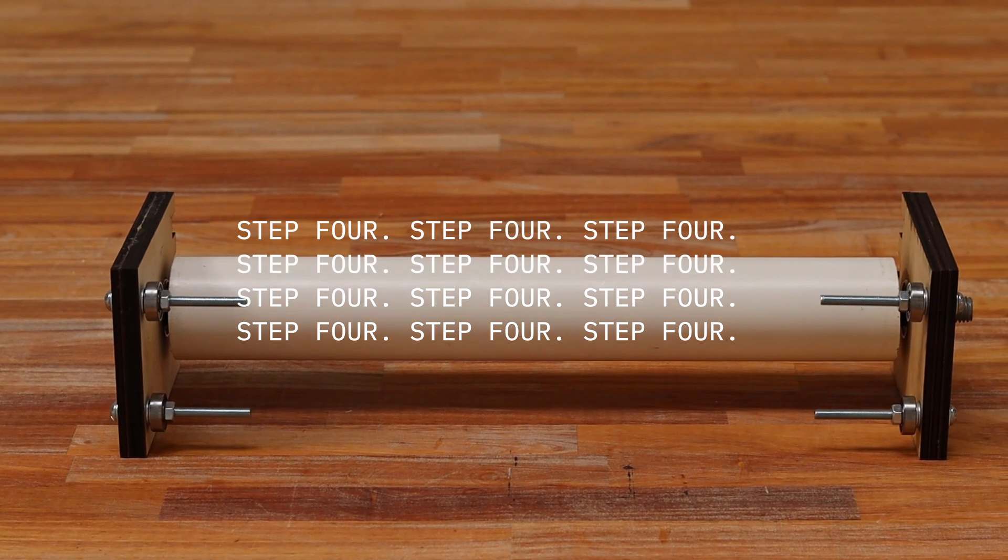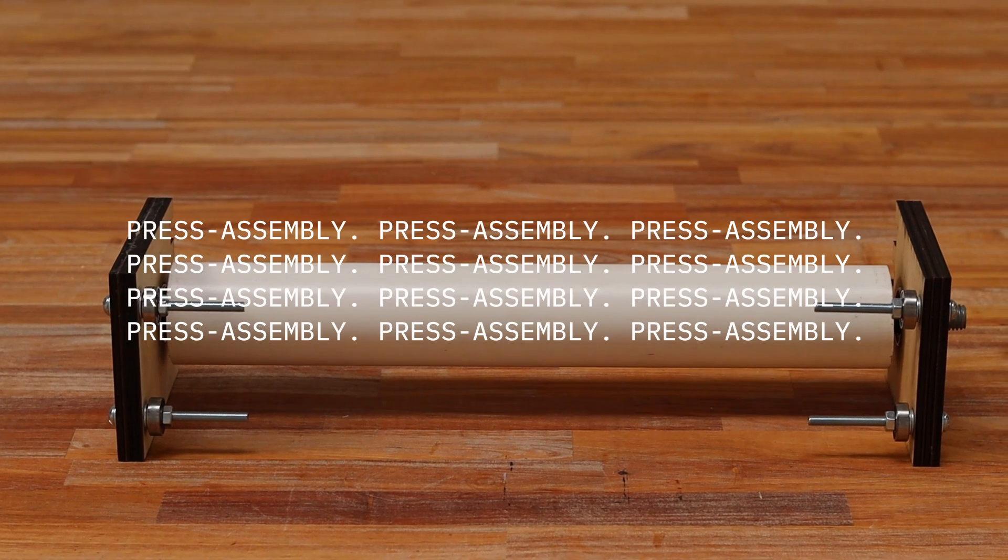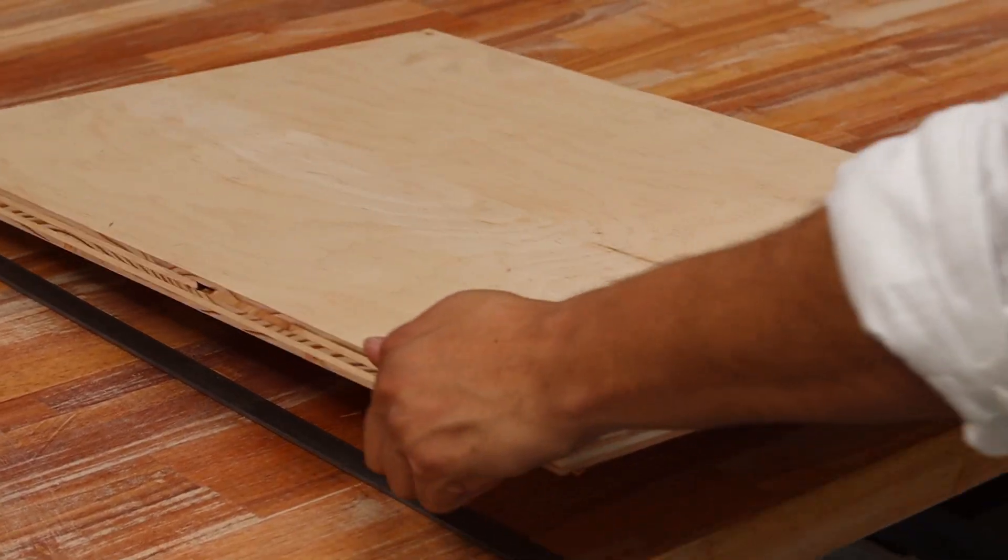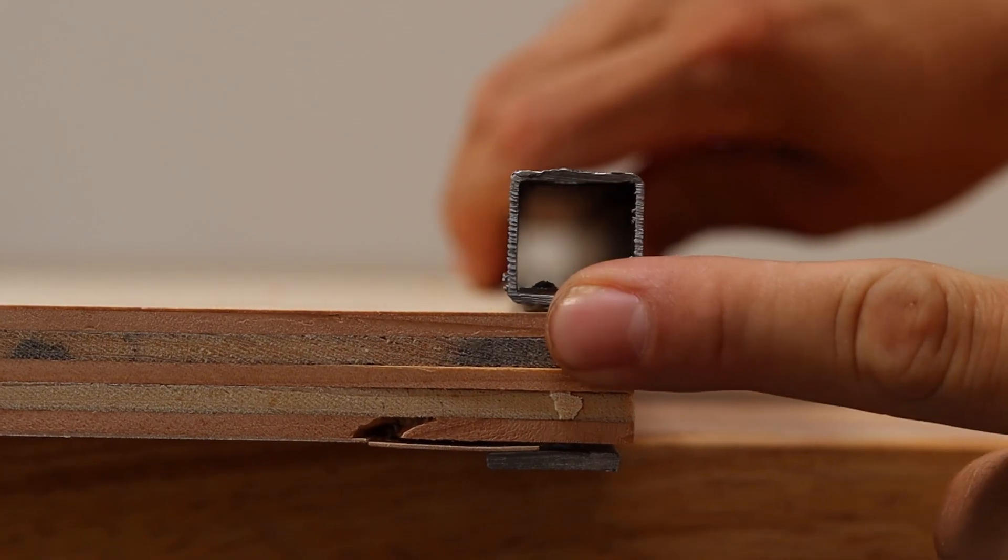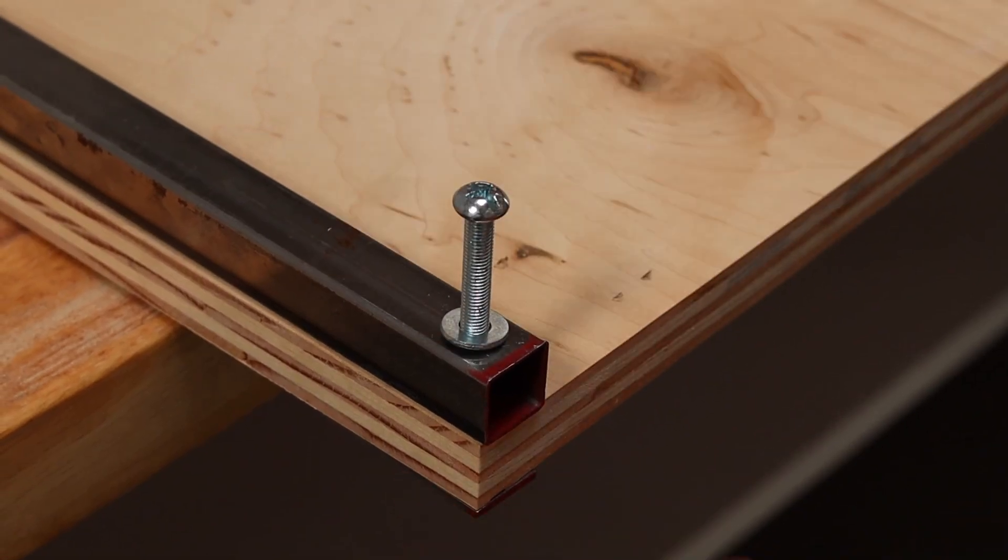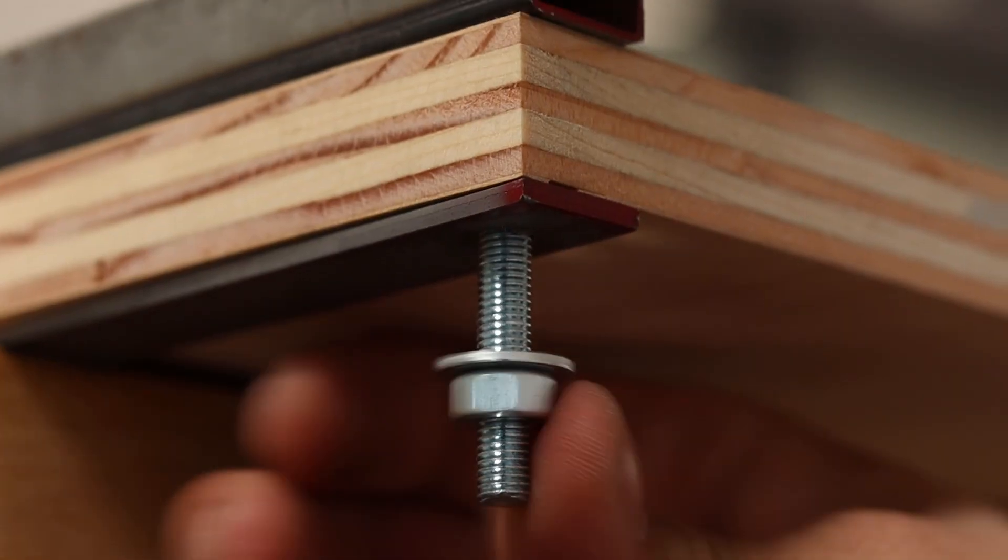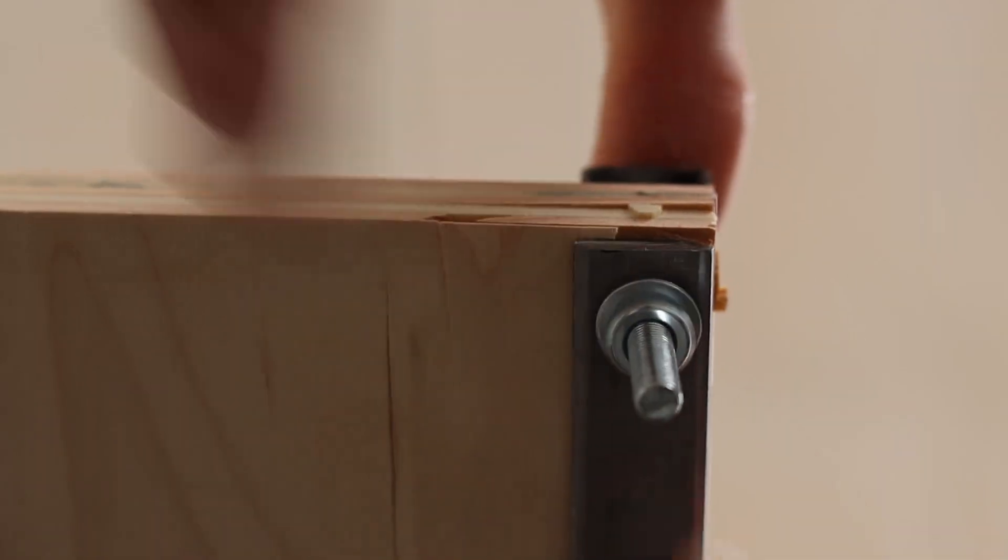Step number four. To assemble, screw the weld bar, square tubing, and the press bed together on one end with two of the quarter inch bolts, washers on both ends and nuts.